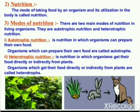Now heterotrophic nutrition. The word 'hetero' means different, 'trophic' means prepare. It is the nutrition in which organisms get their food directly or indirectly from plants. The organisms which get their food directly or indirectly from plants are called heterotrophs.